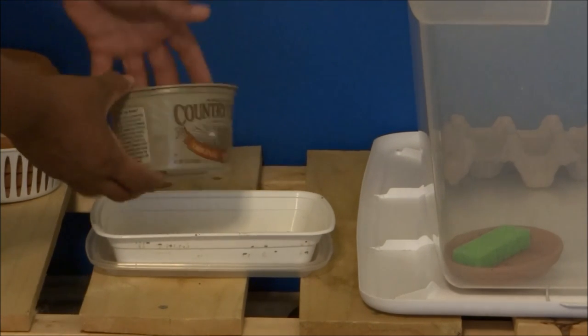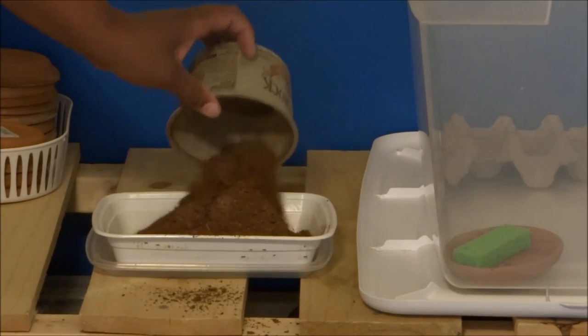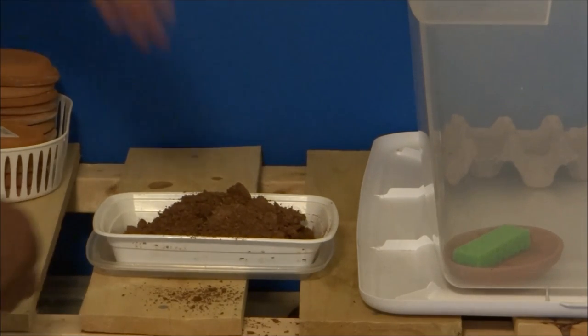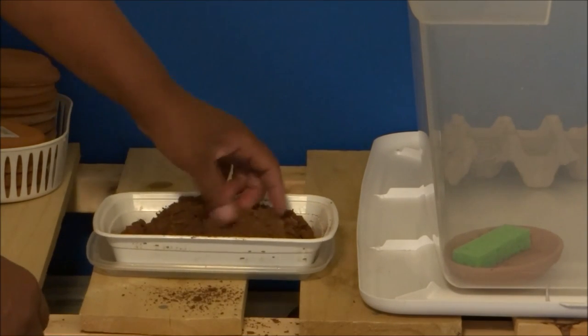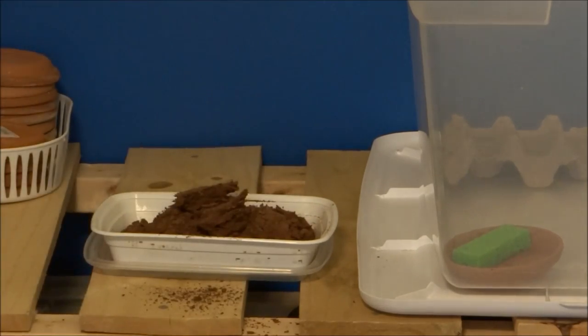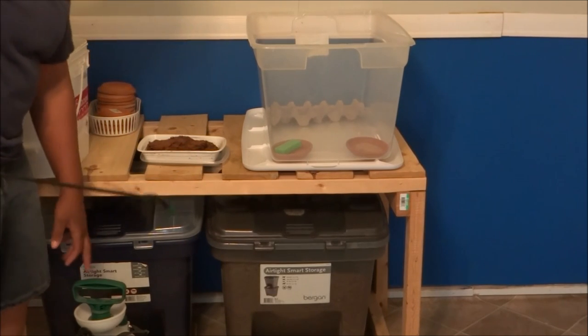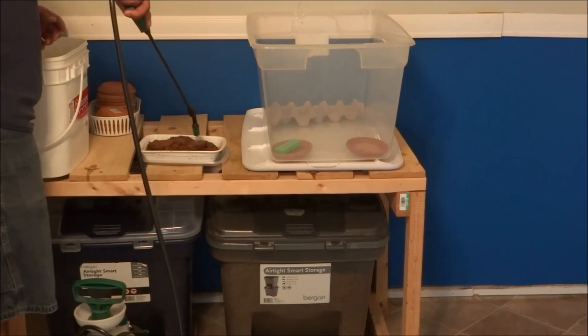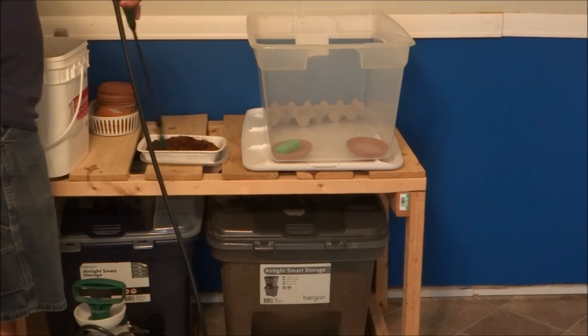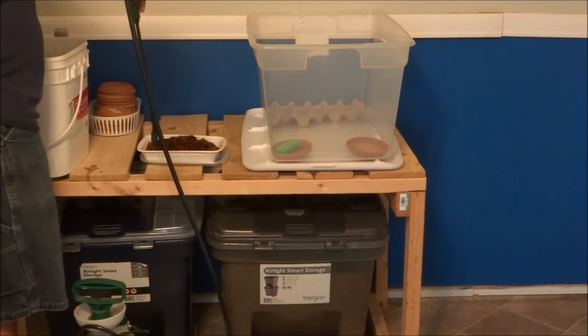So I take one of these small butter containers and drop that in my container there. And then the next thing I'm going to do is get this all wet and soak it up. Get it good and wet. What I use for the water is regular tap water, and I use one of these garden sprayers. This makes it so easy to get this thing watered up. It makes it easy to get the crickets watered too.